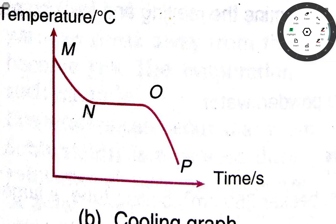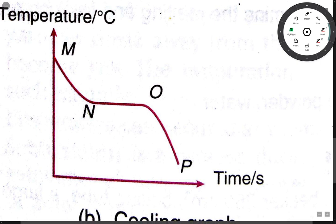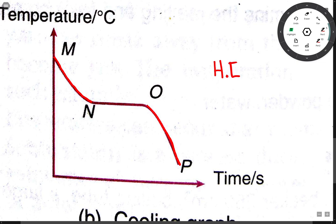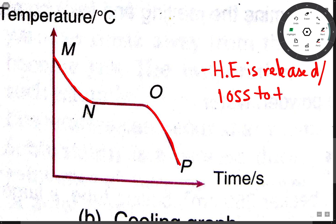I'm going to explain this cooling curve for the cooling process. You can see that the temperature decreases from M to N, and also from L to P. You must know why the temperature decreases — because heat energy is released or lost to the surrounding.